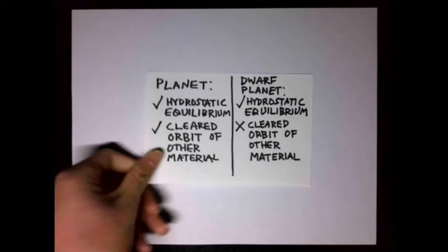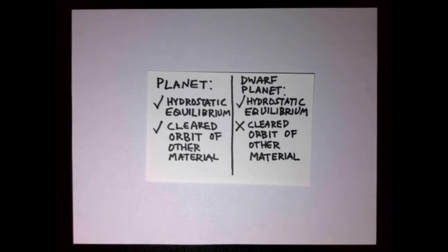A dwarf planet is an object revolving around a star that is large enough for its gravity to have made it reach hydrostatic equilibrium, but has not cleared its orbit neighborhood of other material. A planet is this, but having successfully cleared its orbit of other material.